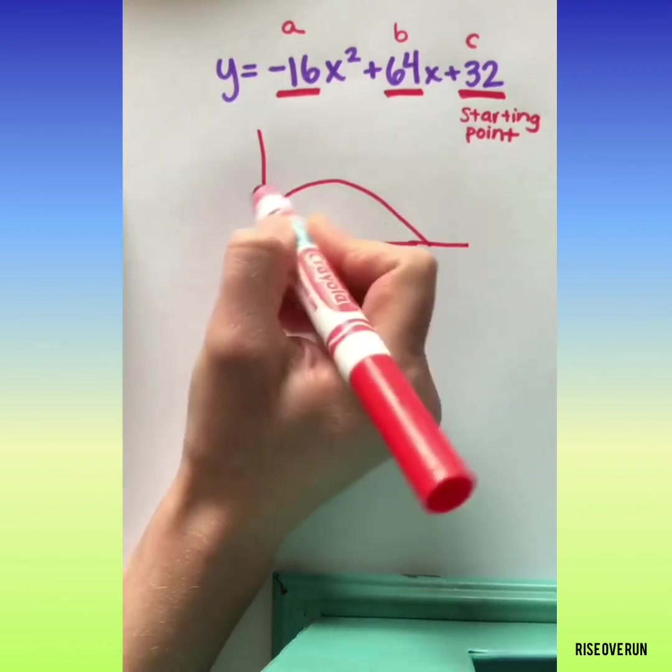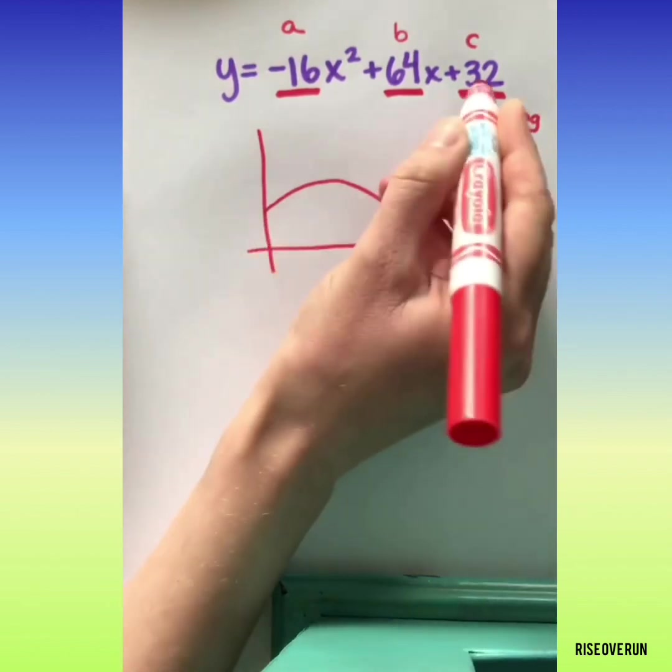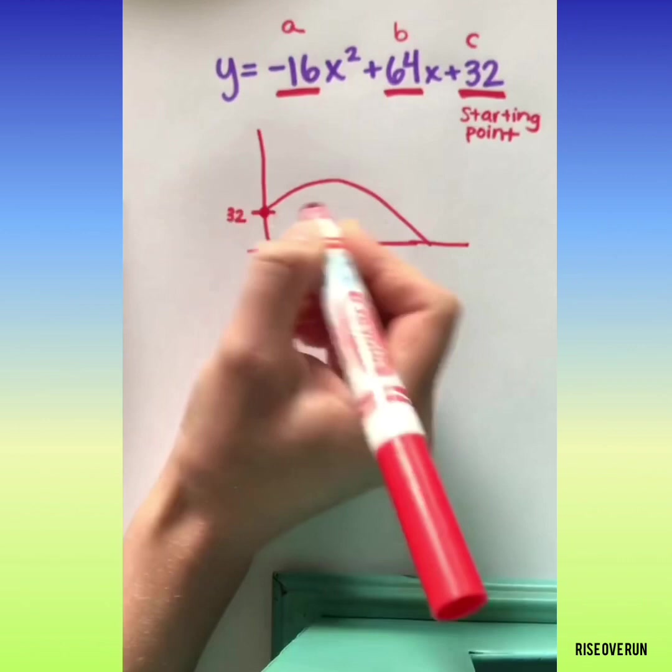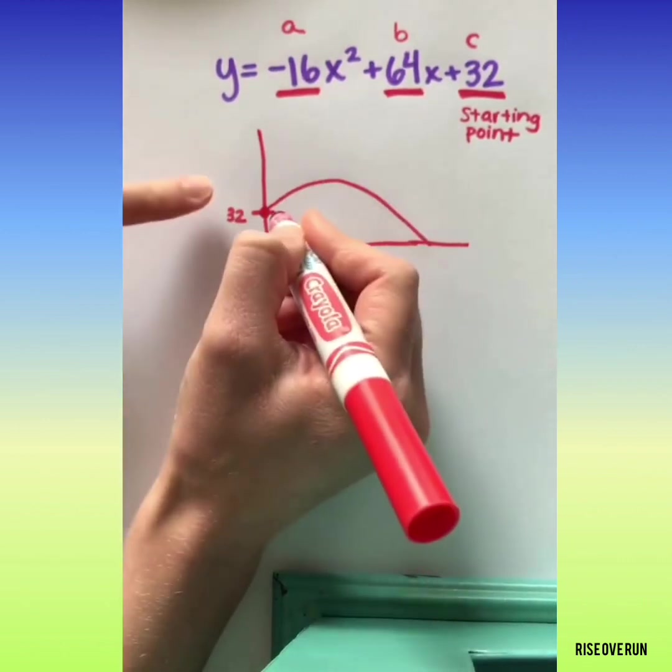Now we can do some math to find these different points. We've already noted that 32 feet is the height that it started at.